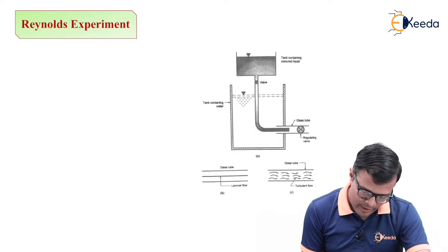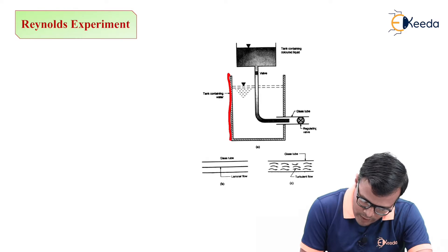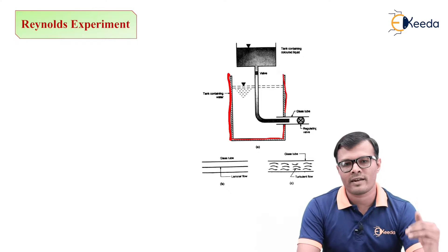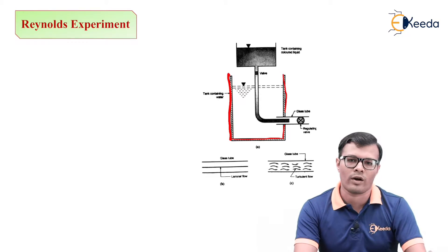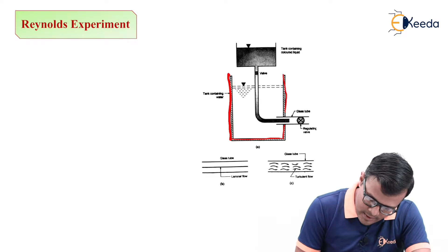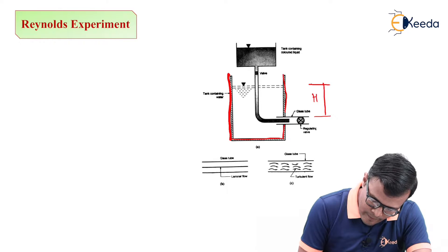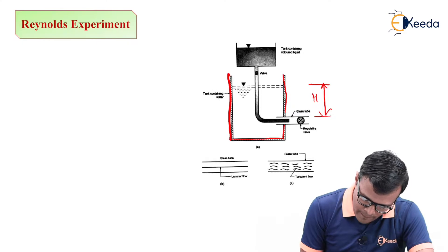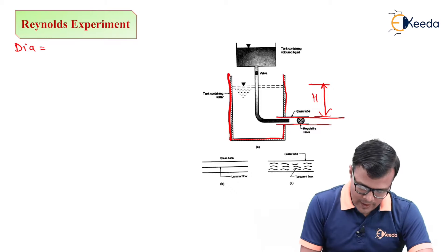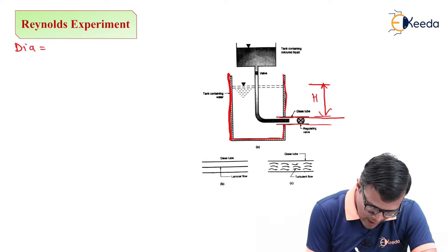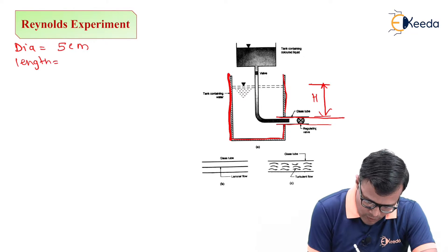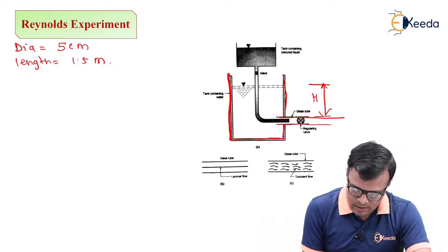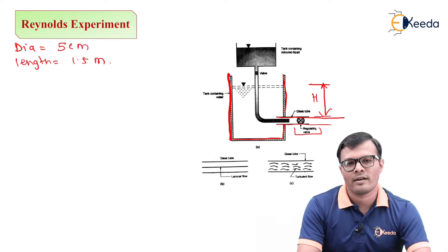Reynolds designed an experiment using a water tank in which a constant head is maintained. To maintain constant head, the rate of discharge must equal the rate of addition of water so there is no reduction in head. A pipe emerges from the tank having a diameter of 5 centimeters and length of 1.5 meters — a glass or transparent tube — with a regulating valve at its end to control discharge.